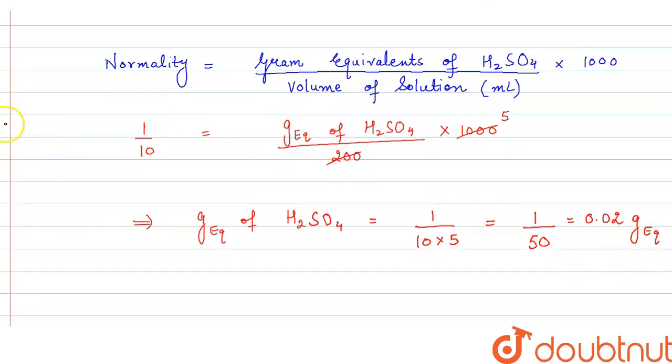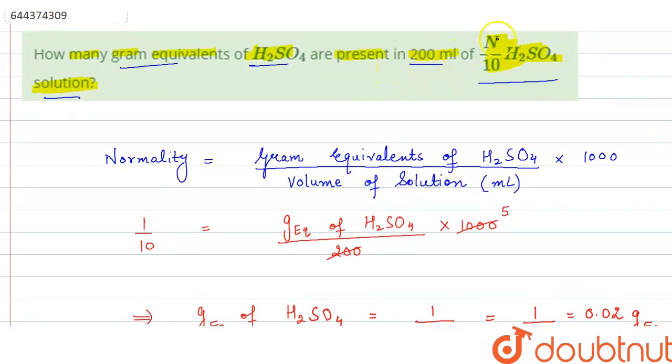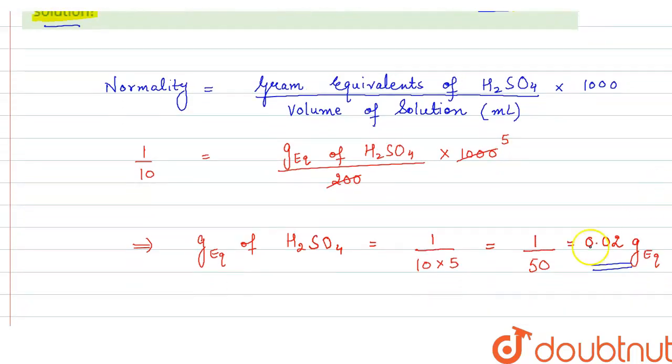So this will be the answer. 0.02 gram equivalent of H2SO4 are present in 200 ml of N by 10 H2SO4 solution. So, 0.02 gram equivalent is the answer.